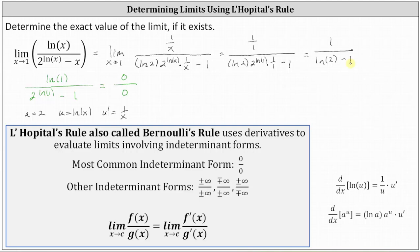This is the exact value of the original limit. As a decimal approximation, this is approximately negative 3.2589. But this question does ask for the exact value of the limit if it exists, and therefore we say the limit is equal to 1 divided by the difference of natural log 2 and 1.